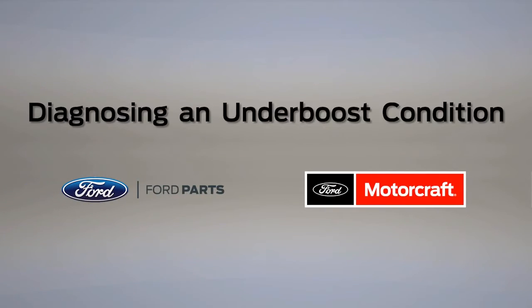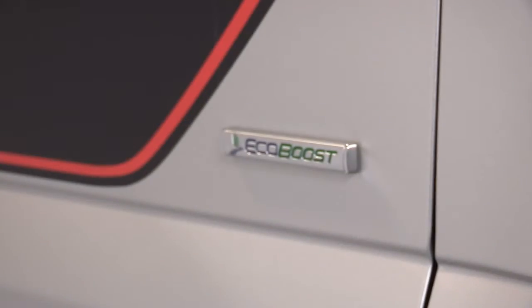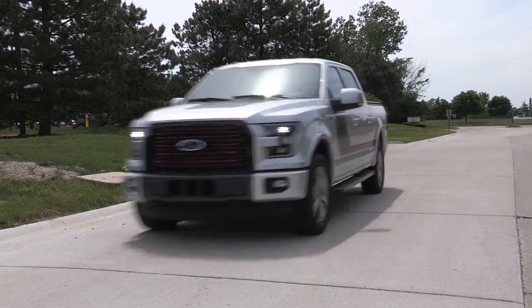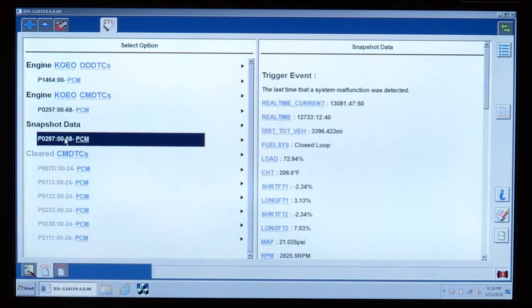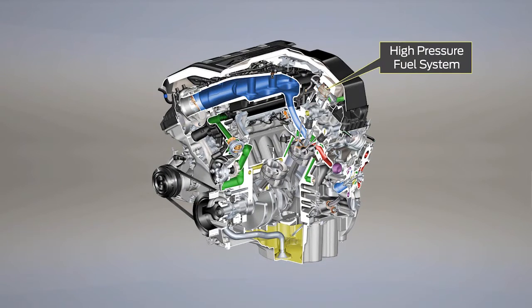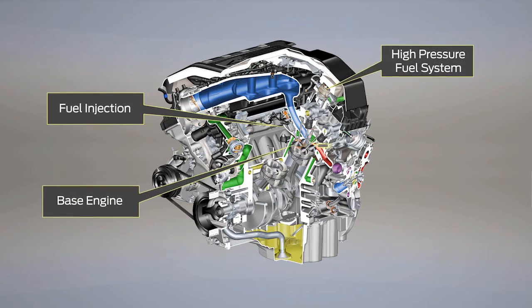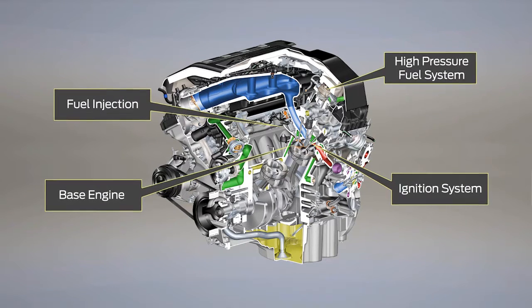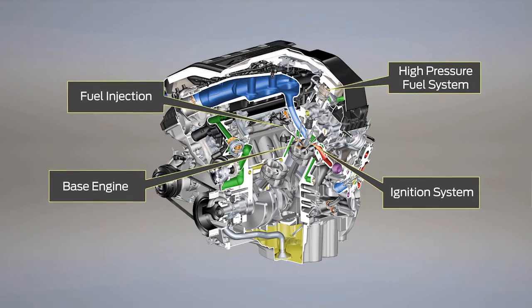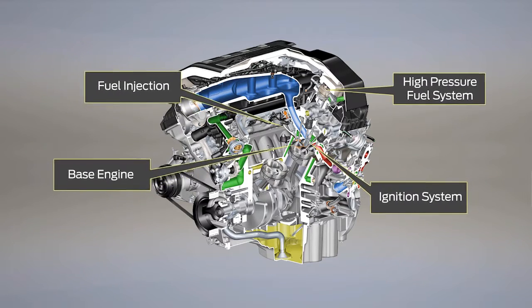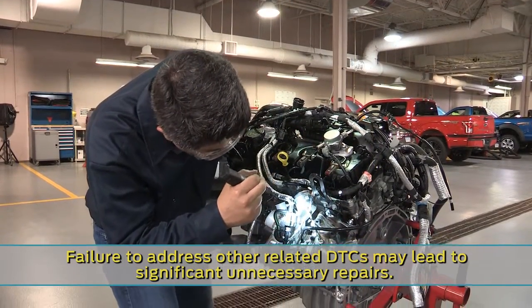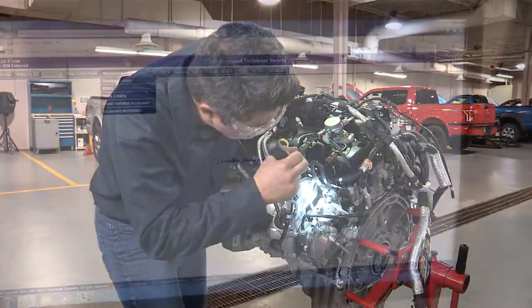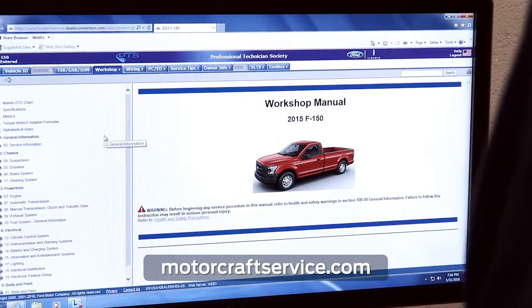When you need to diagnose a lack of power on any vehicle equipped with an EcoBoost engine, also known as a gasoline turbocharged direct injection or GTDI, start by checking for any related diagnostic trouble codes stored in the powertrain control module or PCM. There are multiple systems that can cause poor turbocharger performance or an underboost condition. A P0299 turbocharger underboost DTC can set because of a fault with these other systems. Correct any other system faults or DTCs that are present before diagnosing a turbocharger performance related concern. Follow the procedures in the workshop manual or on MotorCraftService.com as needed.